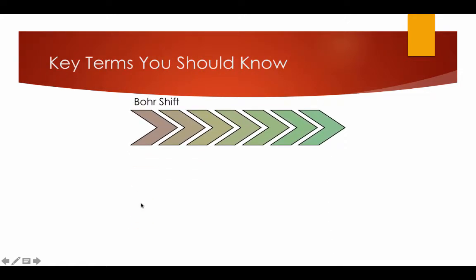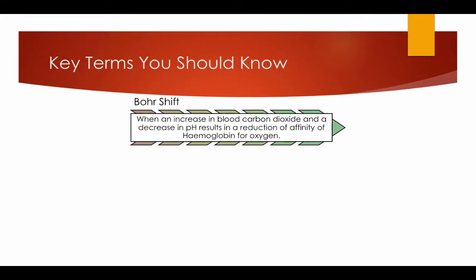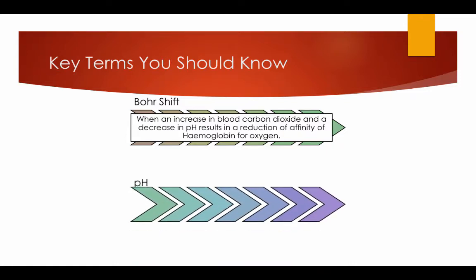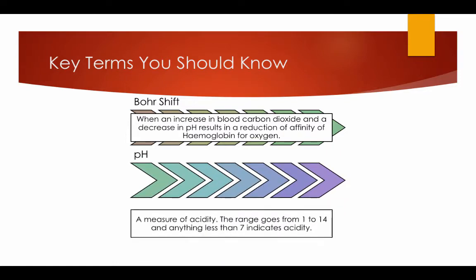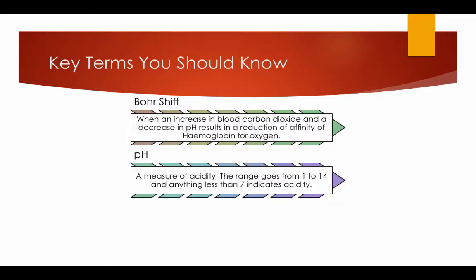Key terms you should know. Bohr shift: when an increase in blood carbon dioxide and a decrease in pH results in a reduction of affinity of the haemoglobin for oxygen. pH: a measure of acidity. The range goes from 1 to 14 and anything less than 7 indicates acidity.